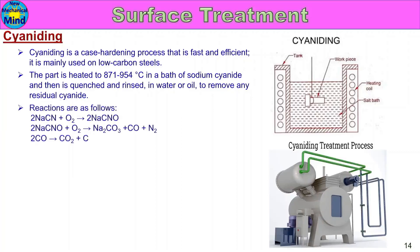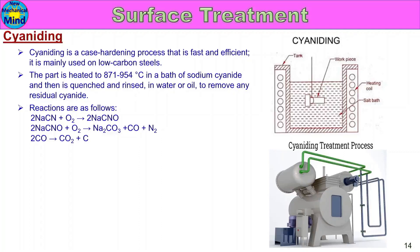The reactions are as follows. 2 NaCNO → 2 NaCNO₂; then NaCO₃ + CO + N₂ — nitrogen is released, 2CO gives CO₂, and carbon is released. The carbon and nitrogen diffuse into the metal surface.